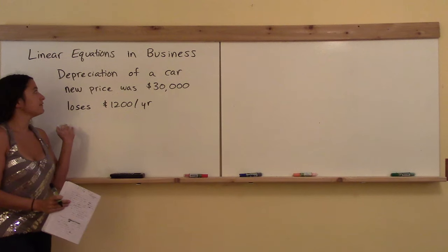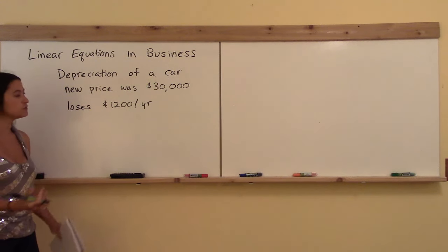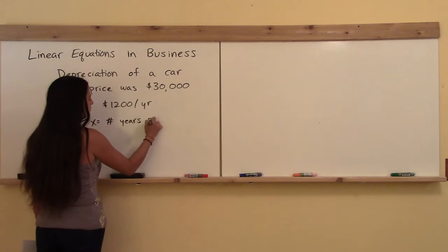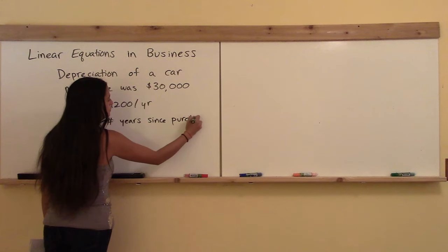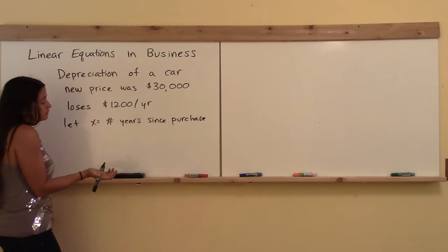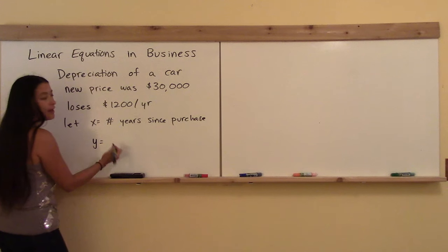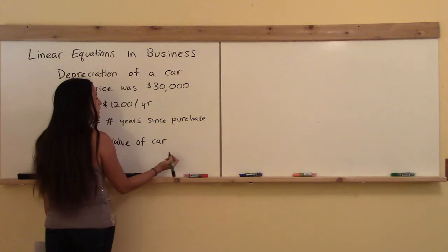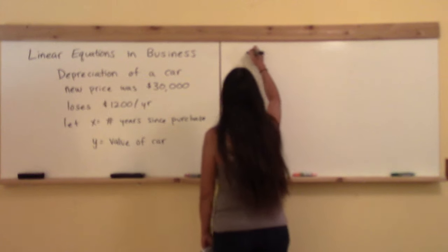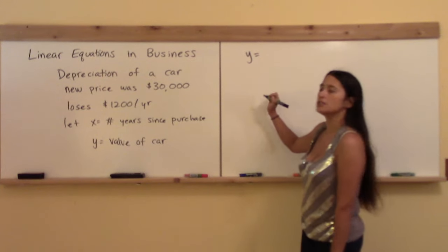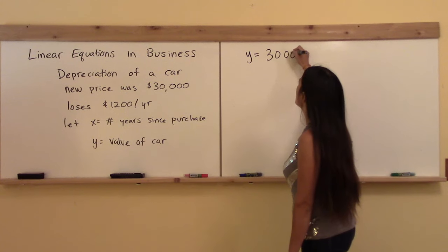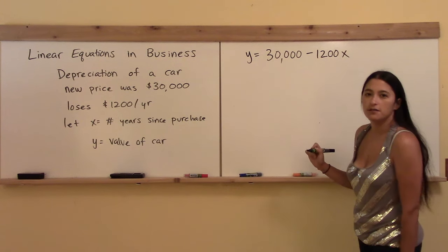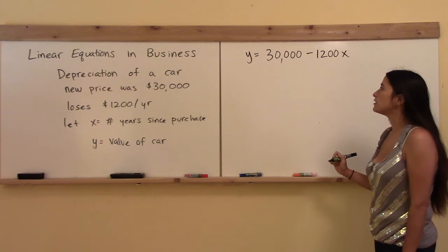I'm going to give you the equation for the value of the car. I'll let X equal the number of years since the original purchase. And Y is going to be the value of the car after X years. The value of the car after X years equals the original $30,000, and then it's losing $1,200 for every year that I own it. So this is the equation for the value of the car in dollars.